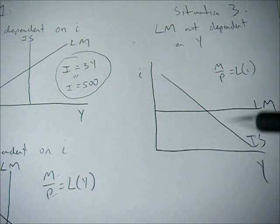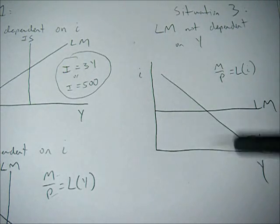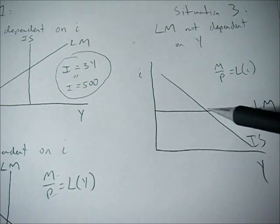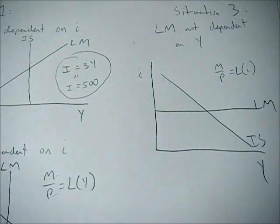So no matter what the level of GDP is, people are going to demand the same amount of money, and they only change the amount of money they demand if the interest rate changes, which will cause a shift in our LM curve up or down.